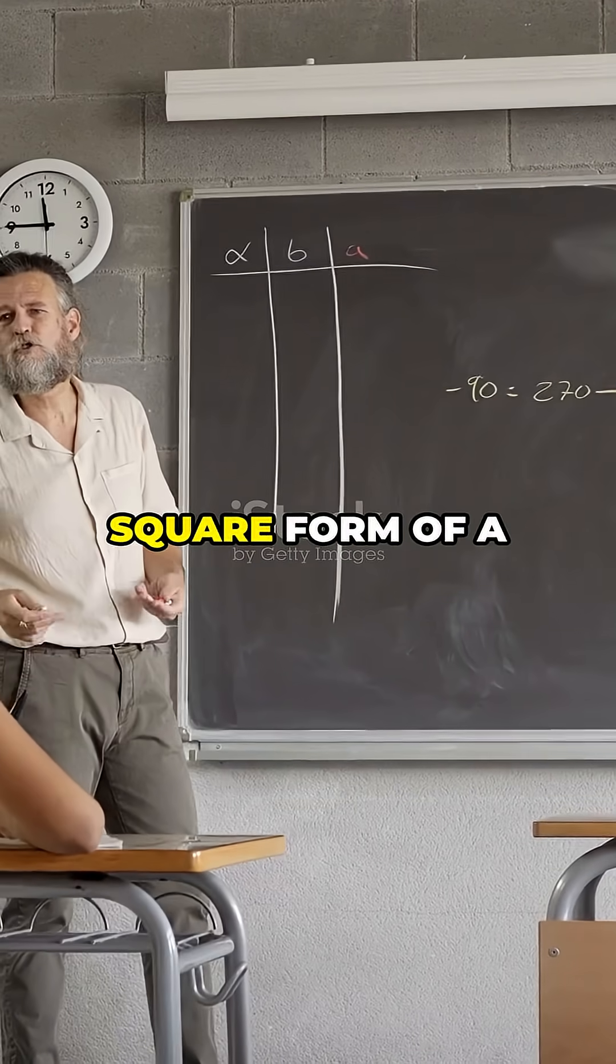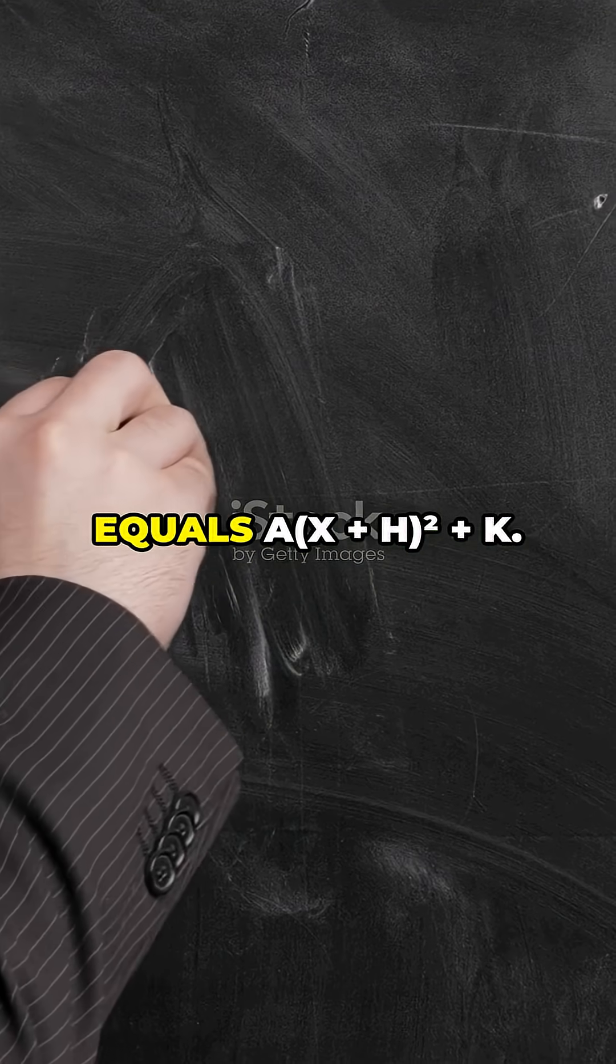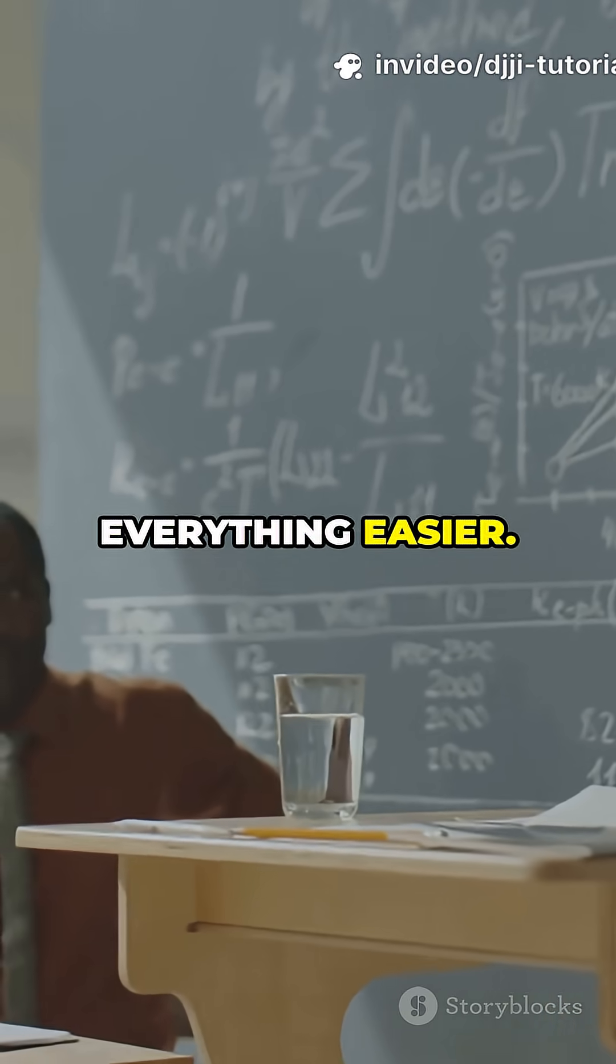First, let's look at the square form of a quadratic, that's y equals a(x + h)² + k. Turns out, this form makes everything easier.